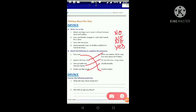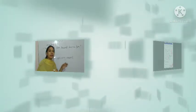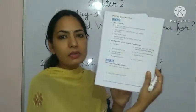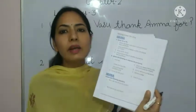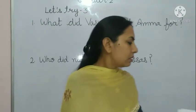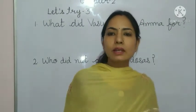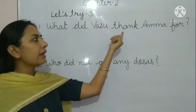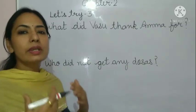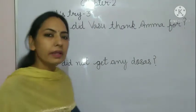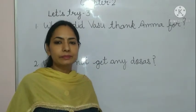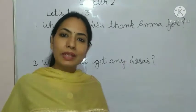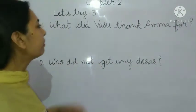Now we will do Let's Try 3. Look at the board. The question is: answer the following questions. First question: what did Vasu thank Amma for? Why did Vasu thank Amma? Vasu thanked Amma for 10 delicious dosas — because he had also eaten Prabhu's share of dosas. So the answer is: Vasu thanked Amma for 10 delicious dosas.